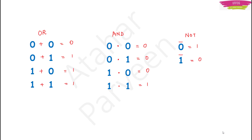For OR, you are adding those values: 0 plus 0 is 0, 0 plus 1 is 1, 1 plus 0 is 1, and 1 plus 1 — in digital electronics there is no place for 2. We are talking only about 0 and 1, so 1 plus 1 is not 2; 1 plus 1 gives a high output, which you denote by 1 only.